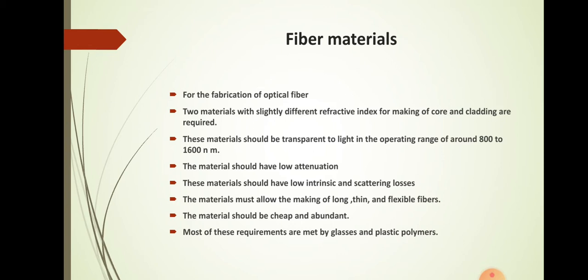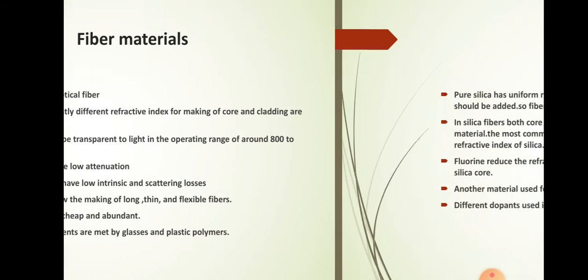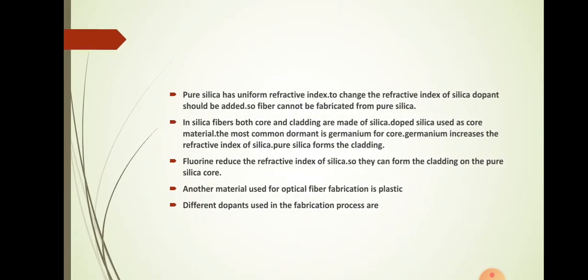The material should have low attenuation in order to provide good communication. It should have low intrinsic losses and also lesser scattering losses, so that we will get a good signal at the output side. The material should allow the making of long, thin, and flexible fibers and should be cheap. Most of these requirements are met by glasses and plastic polymers, so we use them for the construction of optical fibers.